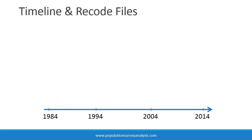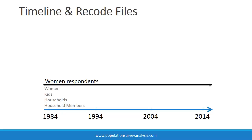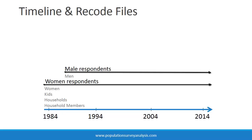Over 300 surveys in 90 countries have been conducted since 1984 when USAID launched the Measure DHS project. Initial surveys only included women respondents. From these interviews, four data files were created for each survey — women, kids, households, and household members. You will notice that the data are duplicated across these four files; for example, the Kids Recode file includes mother and household data. Due to cultural taboos against asking unmarried women about sex, many early surveys only included married women. Soon after, Measure DHS began interviewing all women age 15 to 49 and included male respondents age 15 to 59 in a subset of households, which resulted in a fifth men's data file.